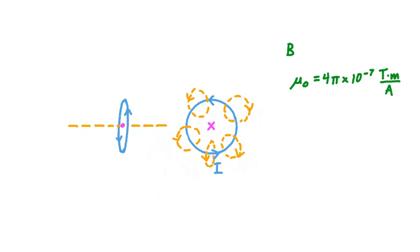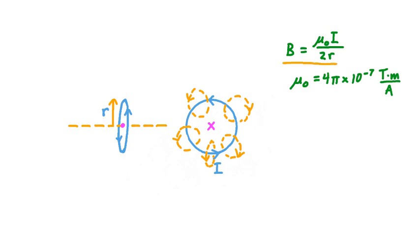The magnetic field strength at the center of our current-carrying loop depends on mu-naught, and it also varies with two physical parameters: the current magnitude I in the loop, and the radius of the loop, lowercase r. When we combine mu-naught, I, and r to solve for field strength B, the magnetic field strength B equals mu-naught times I divided by 2 times r. This relationship is specifically for the magnetic field at the center of the circular loop, in the plane of the circle.